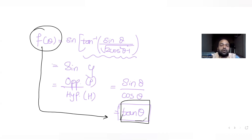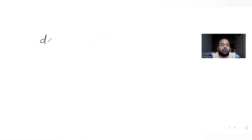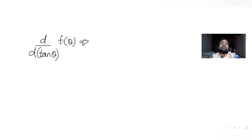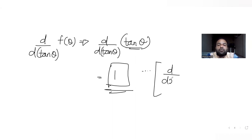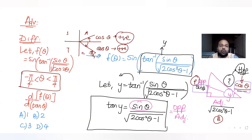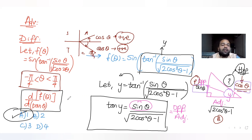Now solving the question: find the derivative of f(θ) with respect to tanθ. Since f(θ) = tanθ, we are just finding the derivative of tanθ with respect to tanθ. Just as the derivative of x with respect to x is 1, the derivative of tanθ with respect to tanθ is 1. So the answer comes out to 1, and the correct option is 1.